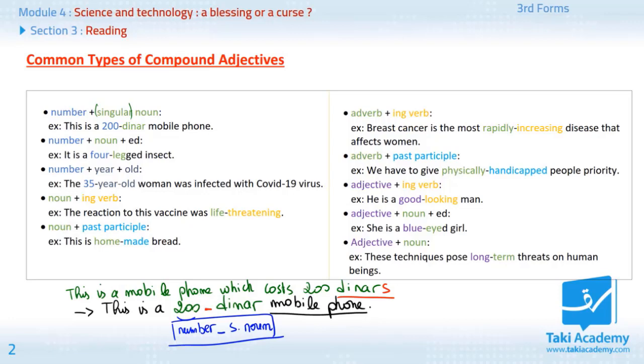Example three. Number plus year plus old. The thirty-five year old woman was infected with COVID-19 virus. Here, I want you to go back to the omitting the s. The original sentence was a woman who has 35 years old. When we turn it into the compound adjective here using ed, you say it's a 35 year old. Not years old.